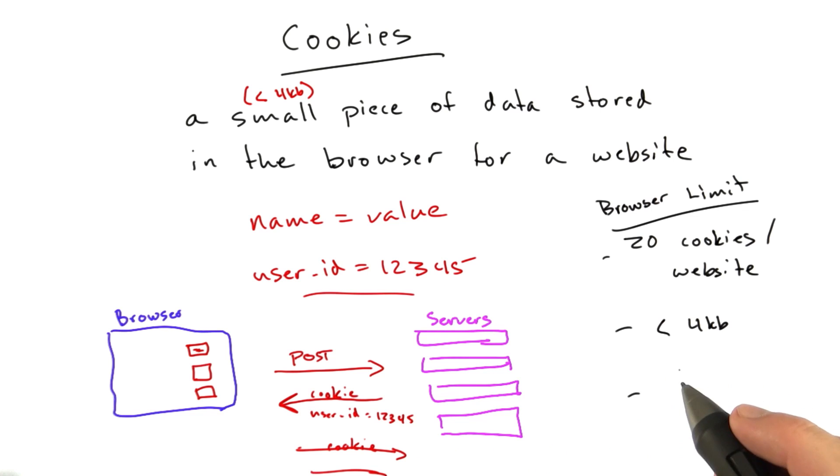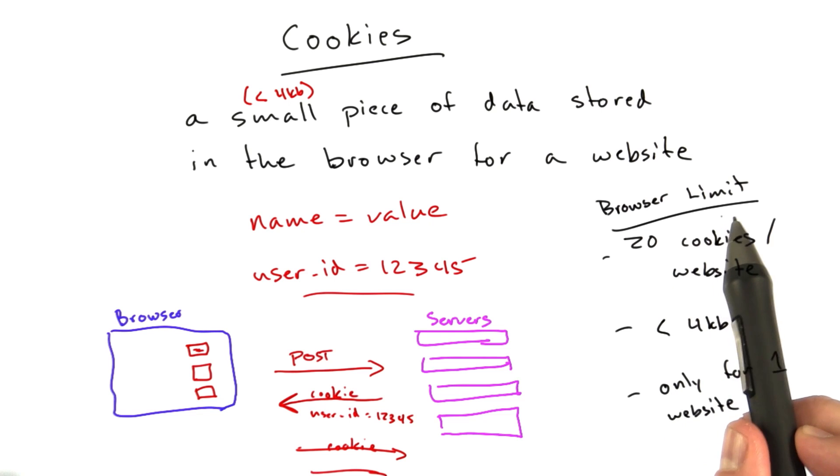Another limitation is a cookie has to be associated with a particular domain. So a cookie for Udacity.com is only sent to Udacity.com. And Udacity.com can only set cookies for Udacity.com. So each website has a few cookies that it can store that are private to that website. A lot of this depends on the browser to behave properly.